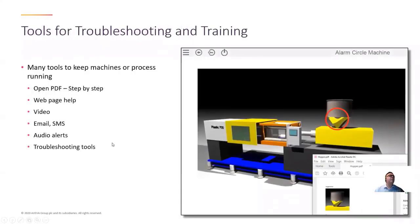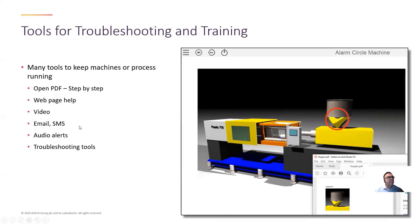There are lots of tools in Aviva Edge to be able to do that. In addition to the standard troubleshooting tools, being able to view and troubleshoot communication statuses, you can also provide operators and maintenance staff things like opening up PDFs and showing a step-by-step guide on how to fix a problem, or how to learn from those things. You could use web pages, play videos, send email, text messages to reach people, or trigger audio alerts.